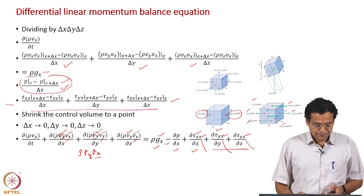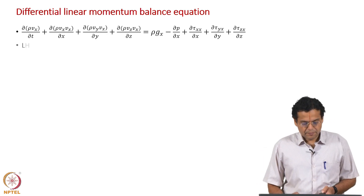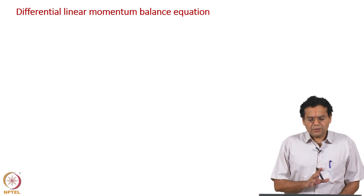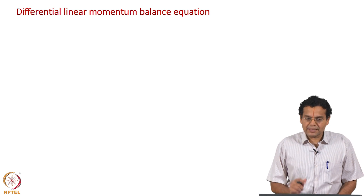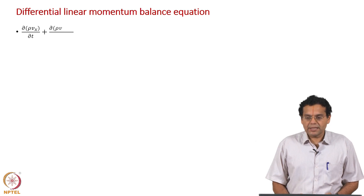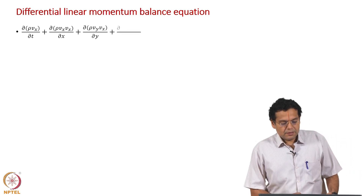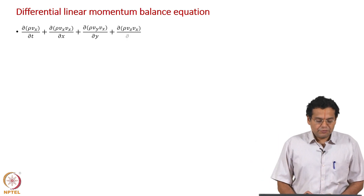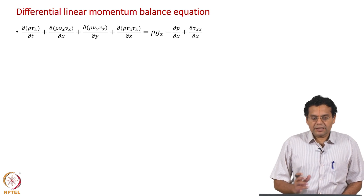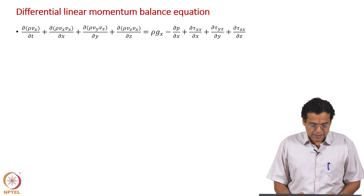Now what we will do is put the significance of each term very precisely, so that you understand and remember. Writing down the linear momentum balance formally: the first term is rate of accumulation of momentum, the second term is convective momentum, and the right hand side contains gravity force, pressure, and viscous stresses.